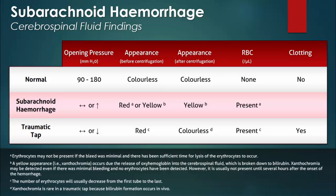With a traumatic tap, blood clotting can occur within the test tube of cerebrospinal fluid due to the presence of plasma fibrinogen. It does not occur with a subarachnoid hemorrhage because fibrinolysis has occurred in vivo. Less characteristic findings that can occur in the setting of a subarachnoid hemorrhage include elevations in protein and glucose levels, as well as in the white blood cell count.